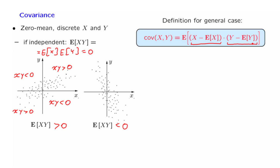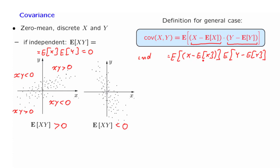Now, if the two random variables are independent, we already saw that in the zero-mean case the covariance is going to be zero. So how about the case where we have non-zero means? Well, if we have independence, then we have the expected value of the product of two random variables. x and y are independent, so x minus its expected value is independent from y minus its expected value. And so the covariance is going to be the product of two expectations. But the expected value of x minus its mean is zero, and the same is true for y as well. So the covariance in this case is going to be equal to zero. So in the independent case, we have zero covariance.